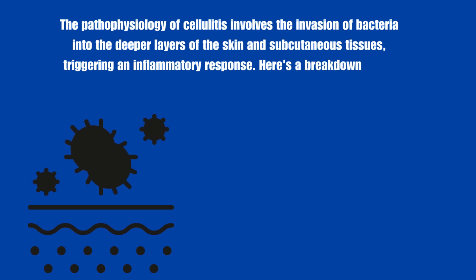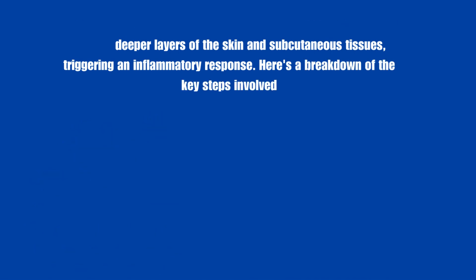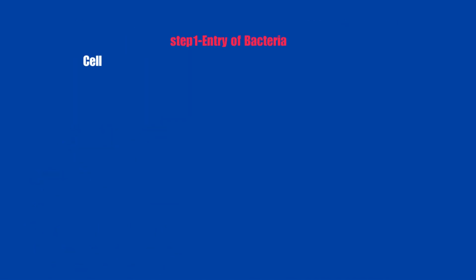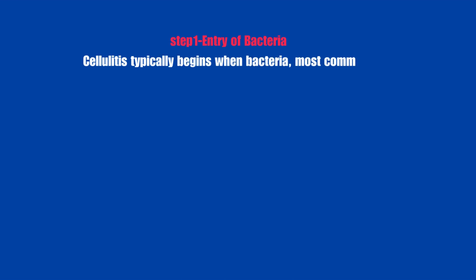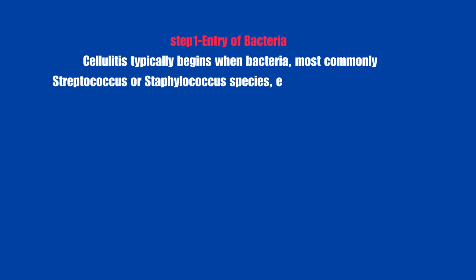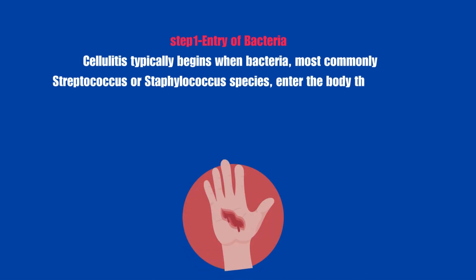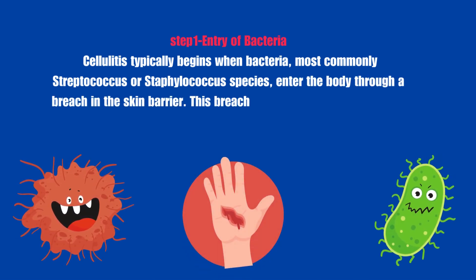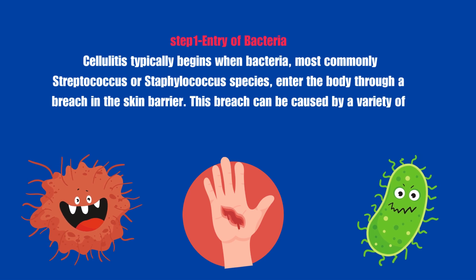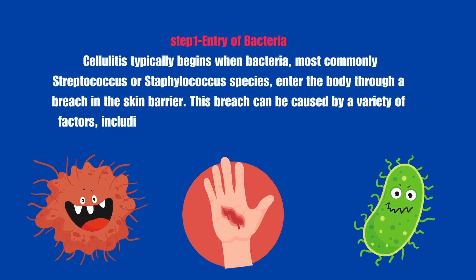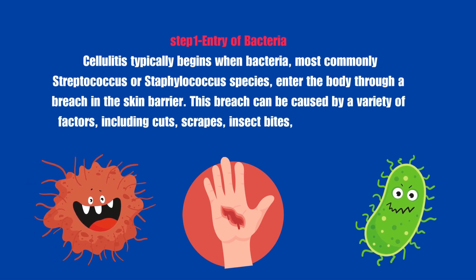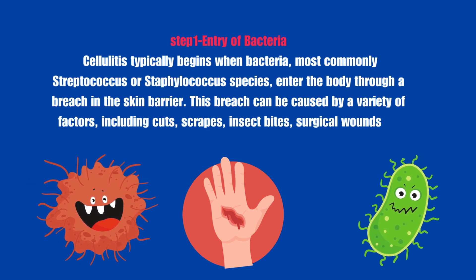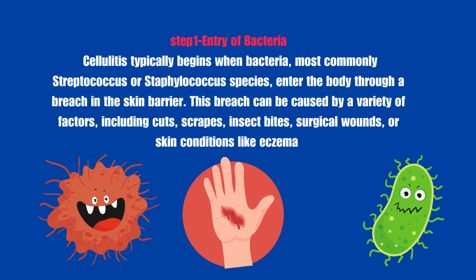Here's a breakdown of the key steps involved. Entry of bacteria: Cellulitis typically begins when bacteria, most commonly Streptococcus or Staphylococcus species, enter the body through a breach in the skin barrier. This breach can be caused by a variety of factors including cuts, scrapes, insect bites, surgical wounds, or skin conditions like eczema.